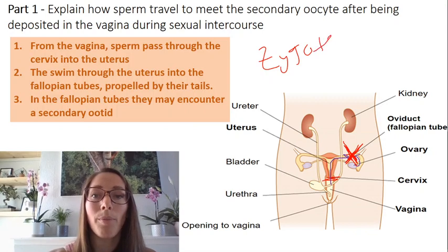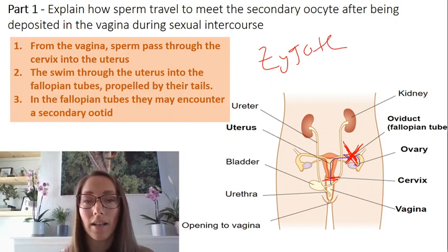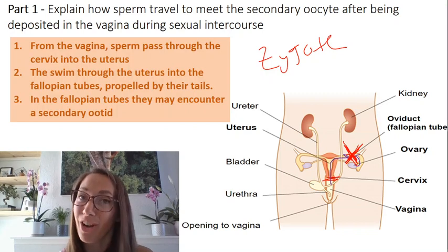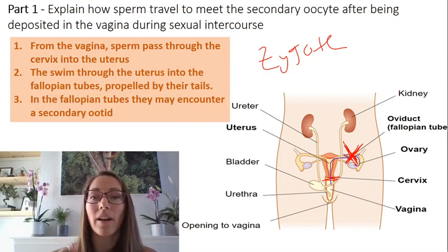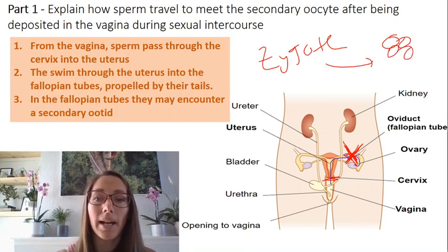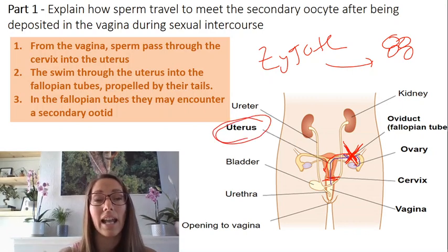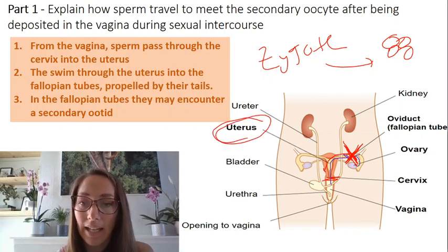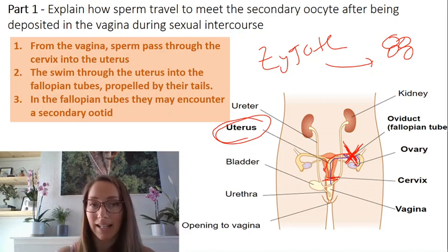That zygote — the fertilized ovum — will then divide into a small cluster of cells, which will move back down into the uterus and embed in the vascular layer called the endometrium. We'll cover more on that when we look at pregnancy later.